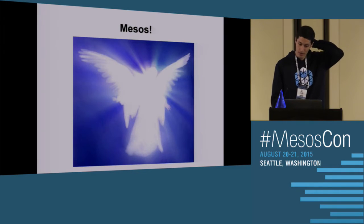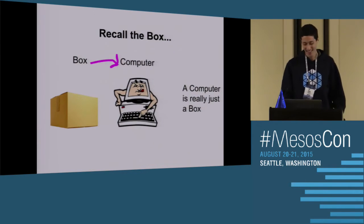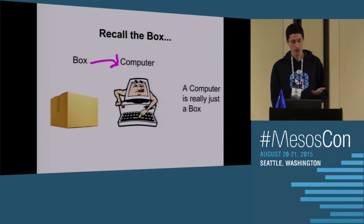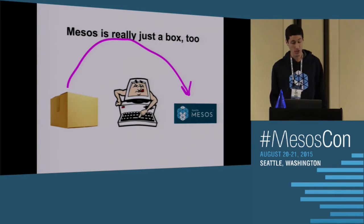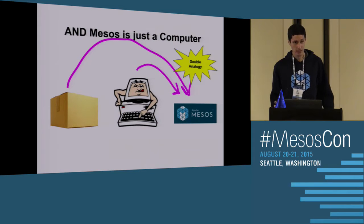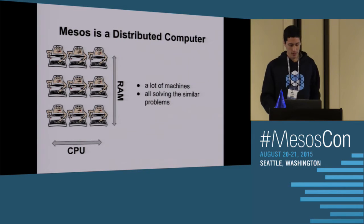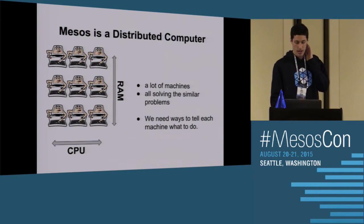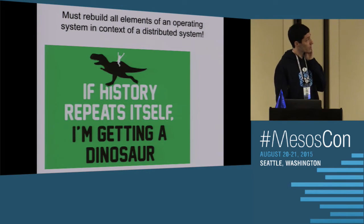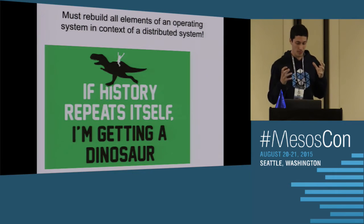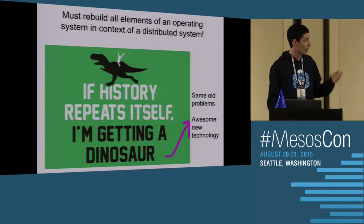This is where Mesos comes in — maybe angel or devil, I don't know. If we recall the analogy that a computer is just a box, then Mesos is also just a box, and if it's also just a box, it's also just a computer. Mesos is really a distributed computer — that's what they say on the website. What's important is you have a lot of machines all solving similar problems, and you need ways to tell the machines what to do. You're building all the components of an operating system in a distributed system — you're repeating history a little bit.